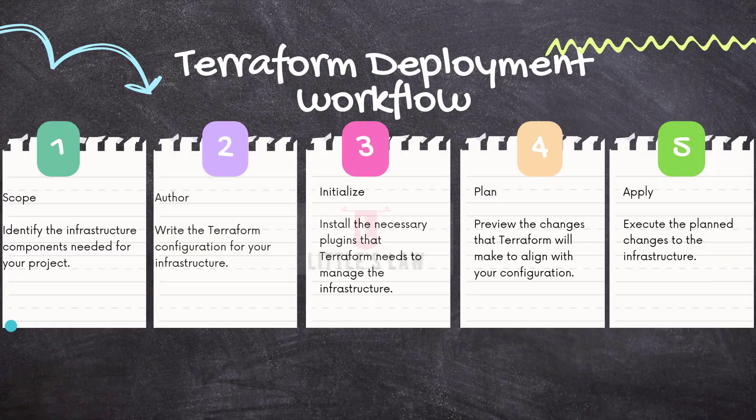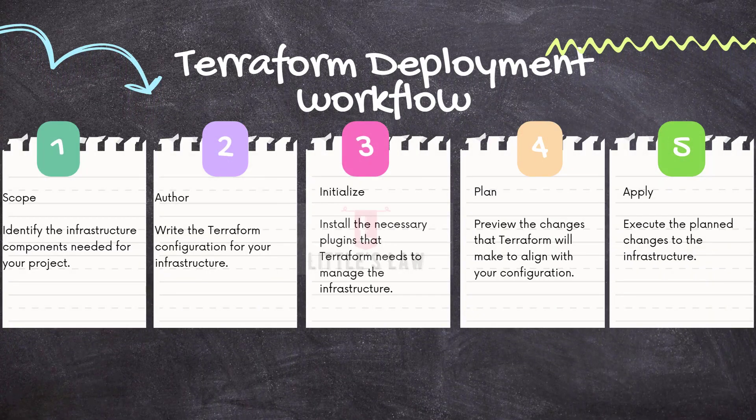Finally, the Terraform deployment workflow has five steps: scope, author, initialize (init), plan, and apply. The first step is scope — we identify the infrastructure components needed for our project. Terraform clearly defines the scope to determine which resources and providers are relevant.